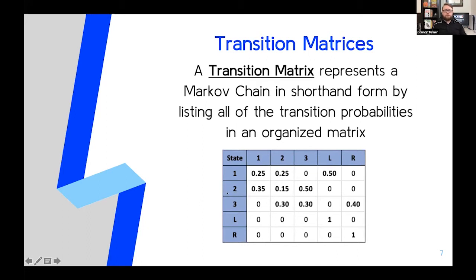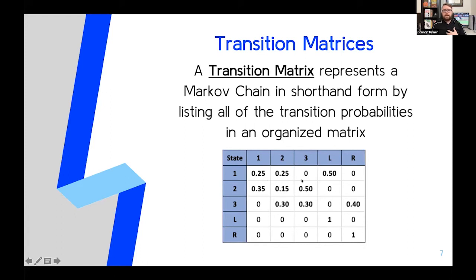This transition matrix gives us a pretty nifty shorthand for figuring out transition probabilities. For example, to find the transition probability of going from state two to state three, we go down to row two and over to column three, and we find that answer is 50%. Transition matrices also have some really special characteristics. Every transition matrix is what we'd call a stochastic matrix, meaning every row sums to one — so 25 plus 25 plus 50. This is going to allow our model to work once we build it up later in this presentation.